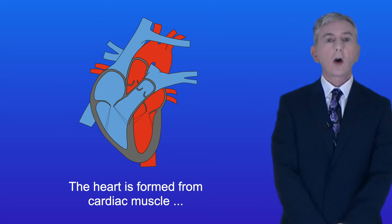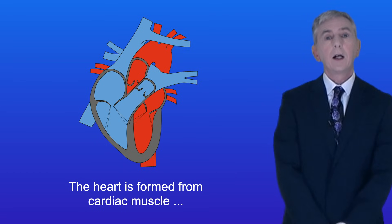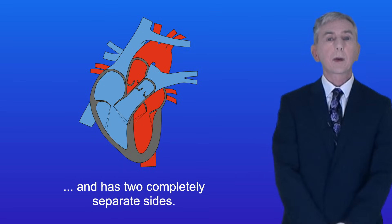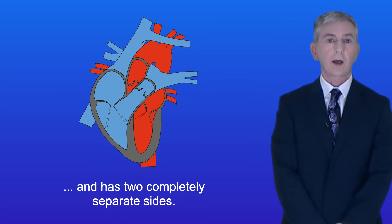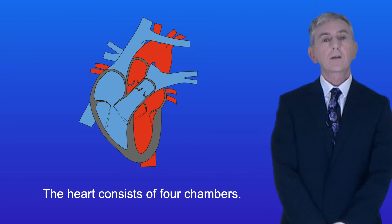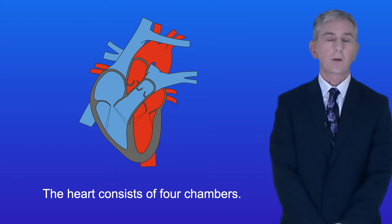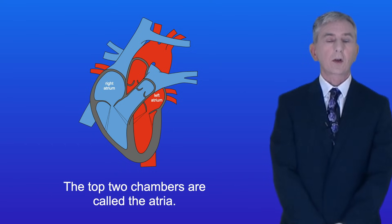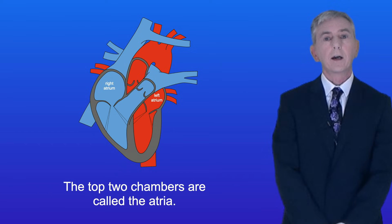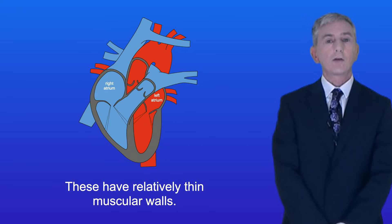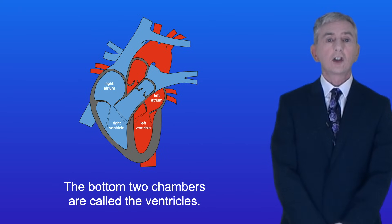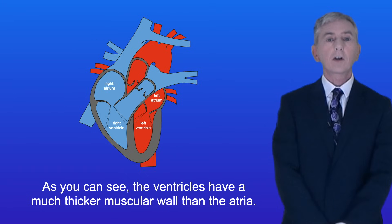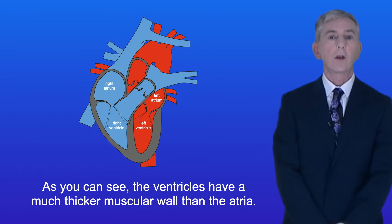The heart is formed from cardiac muscle and has two completely separate sides. The heart consists of four chambers. The top two chambers are called the atria and these have relatively thin muscular walls. The bottom two chambers are called the ventricles and the ventricles have a much thicker muscular wall than the atria.